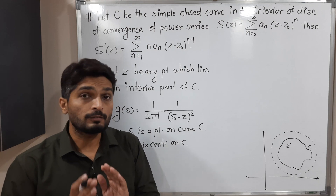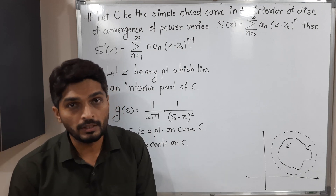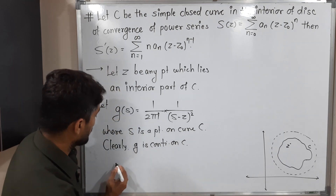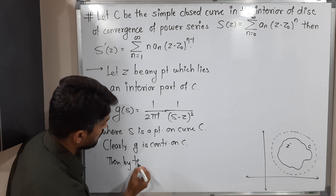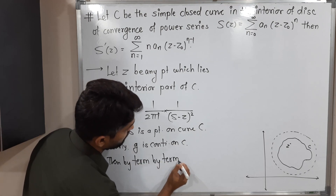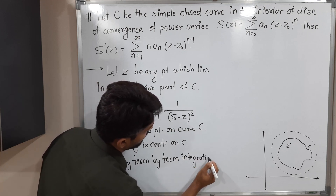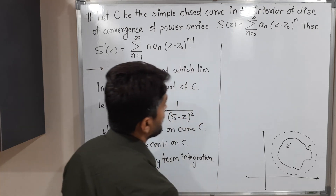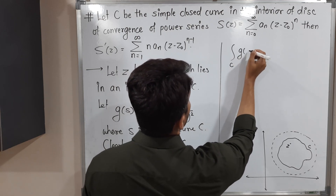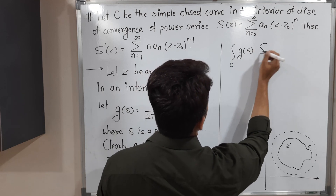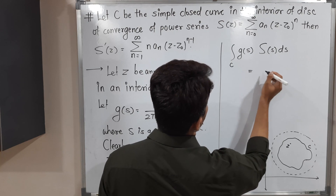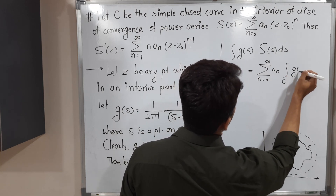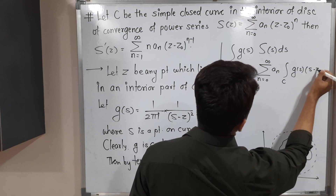Since g is continuous on C, by the previous theorem — term-by-term integration — which we proved in a previous video, we can write: the integral over C of g(s)·S(s) ds equals the summation from n = 0 to infinity of aₙ times the integral over C of g(s)·(s − z₀)ⁿ ds.